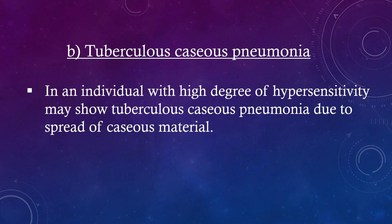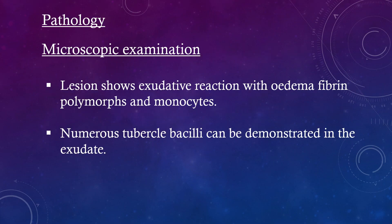Tuberculosis caeous pneumonia: An individual with a high degree of hypersensitivity may show tuberculosis caeous pneumonia due to spread of caeous material. Pathology — Microscopic examination: The lesion shows an exudative reaction with edema, fibrin, polymorphs, and monocytes. Numerous tubercle bacilli can be demonstrated in the exudate.